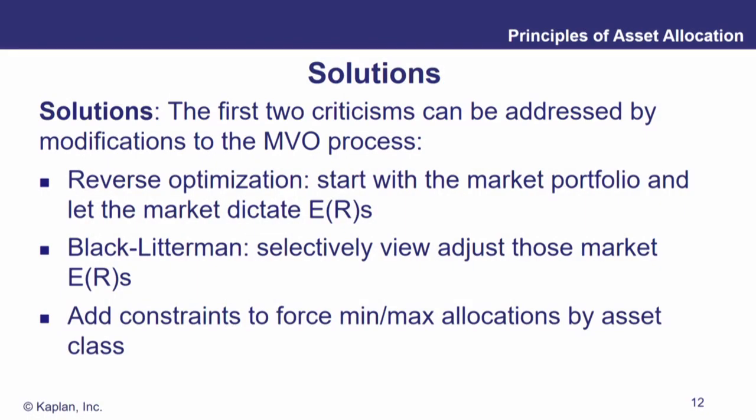So we can take reverse optimization and Black-Litterman as two ways of tweaking the process. Another thing we can do in standard mean variance optimization is add more constraints and basically force the allocations more toward a middle ground. We may say we're uncomfortable with a portfolio that doesn't have at least 10% in bonds or 10% in stocks, or we don't want to see a portfolio allocation that's 90% in real estate. Adding constraints steers those allocations toward the middle, acknowledging that the data may not be fully expressing our market views.